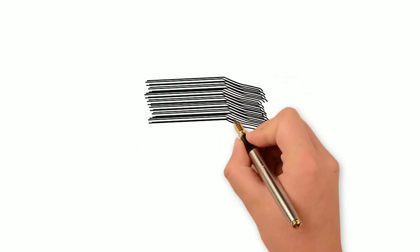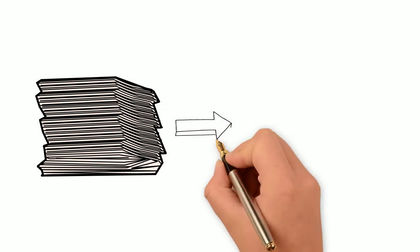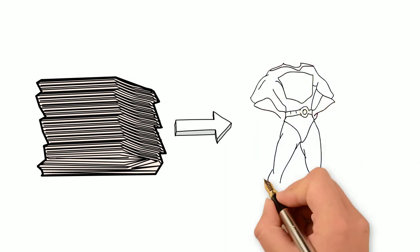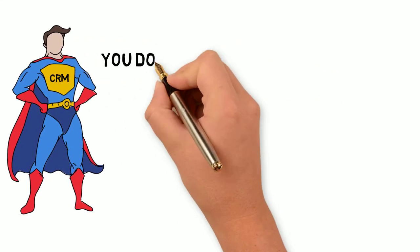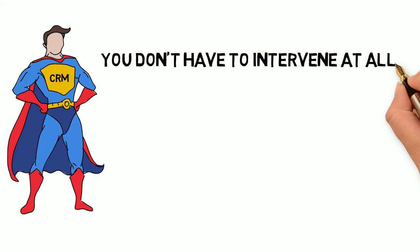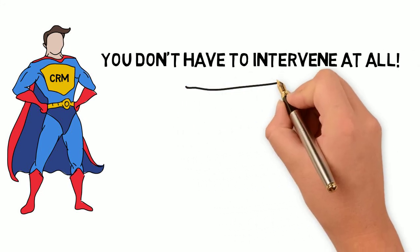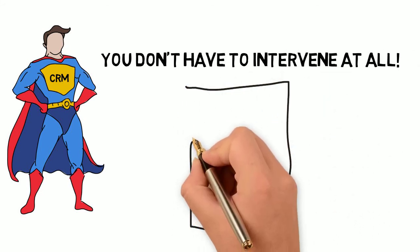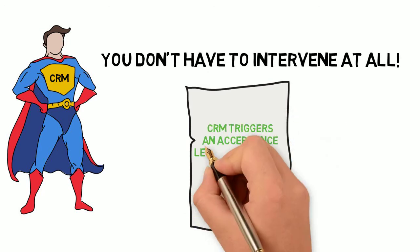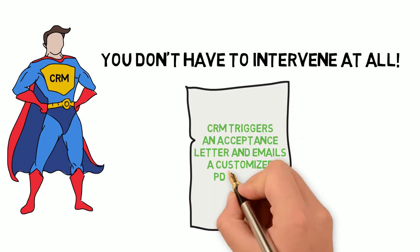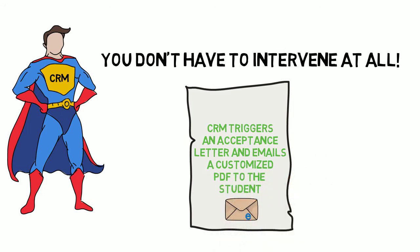Now see how different the procedure would be with CRM. Again, the student applies to the English program and your staff enter the data into the SIS. However, this time, CRM kicks in immediately, and you're not alerted about the application. You don't have to intervene at all. CRM automatically checks the student's record against requirements for the English program. If all requirements are met, CRM triggers an acceptance letter and automatically emails a customized PDF to the student.